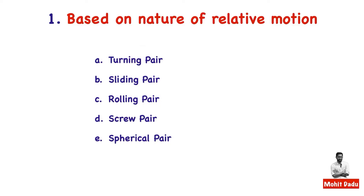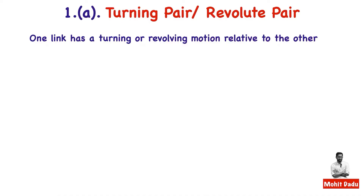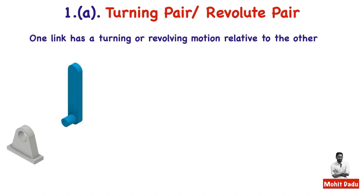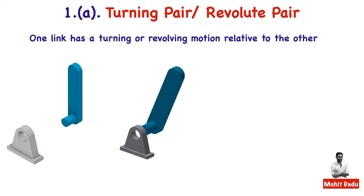The turning pair is also known as the revolute pair. Here one link has a turning or revolving motion with respect to the other. A binary link has two connection points — one connects to the fixed link and another to the second link. The shaft end of the blue link is inserted into the hole end of the other link, forming the pair.